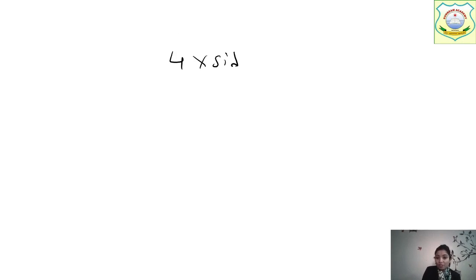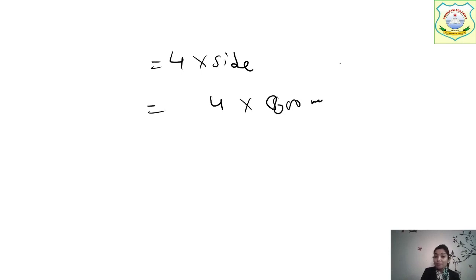So the perimeter formula is 4 × side. We substituted 800 metres for side. He took 2 rounds, so we multiplied by 2. That gives us the final distance.